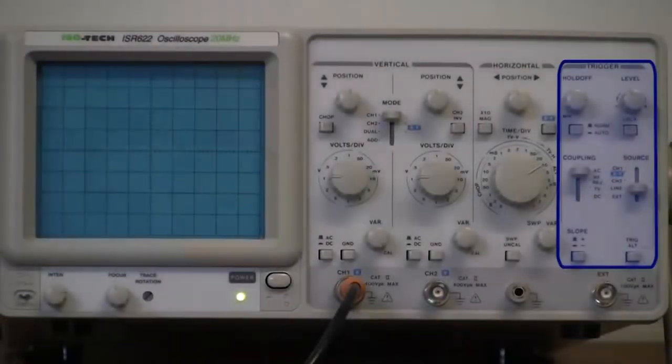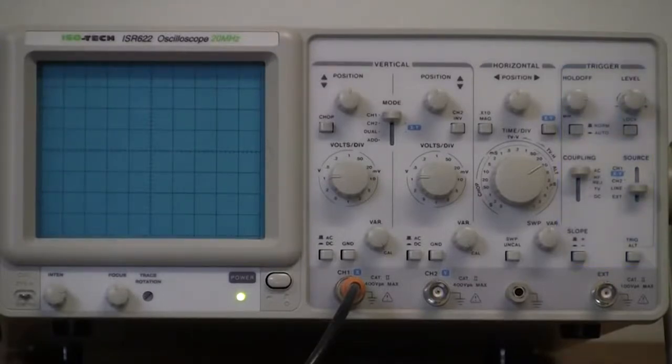The group of trigger controls on the right of the oscilloscope is used to ensure that the input signal is displayed correctly on the oscilloscope screen.